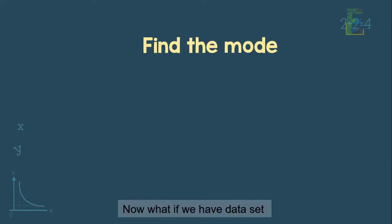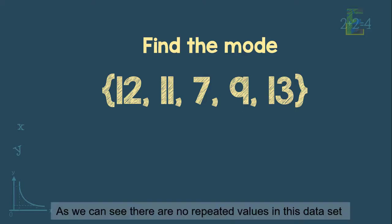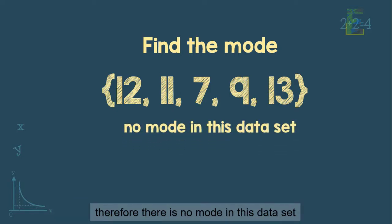Now, what if we have a data set that looks like this? 12, 11, 7, 9, 13. As we can see, there are no repeated values in this data set. Therefore, there is no mode in this data set.